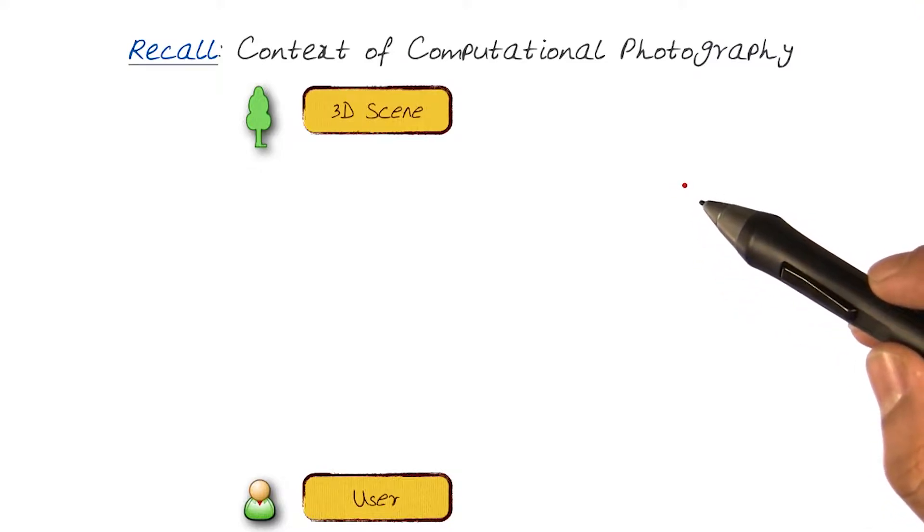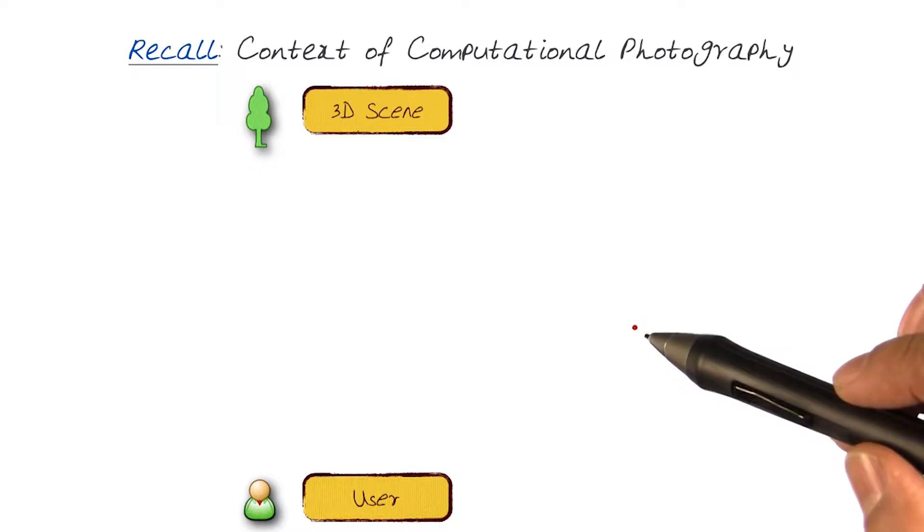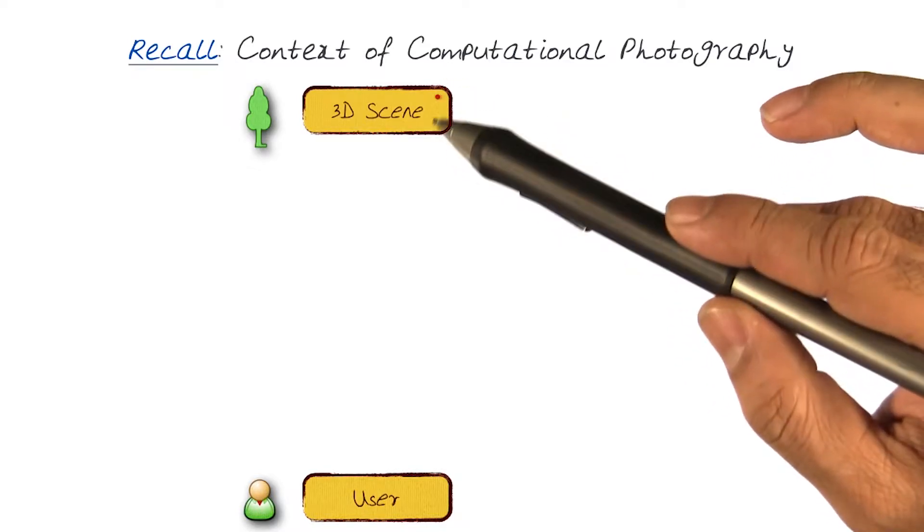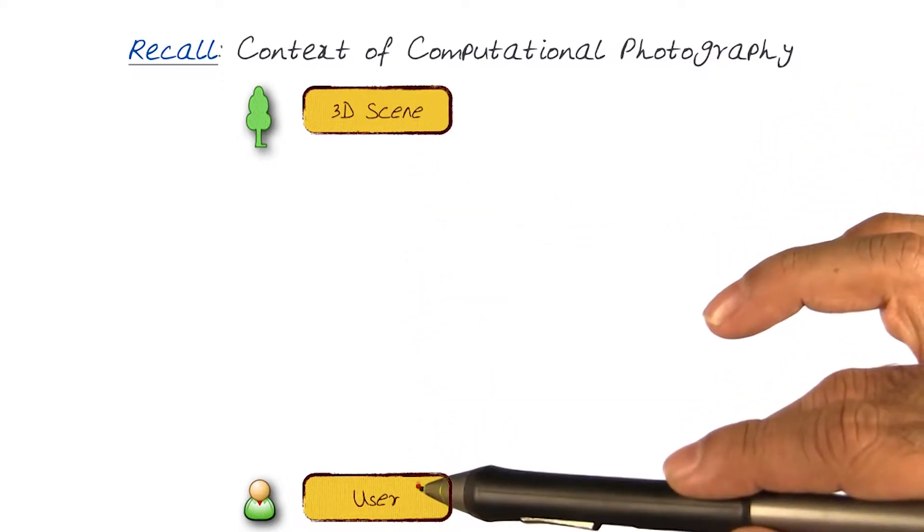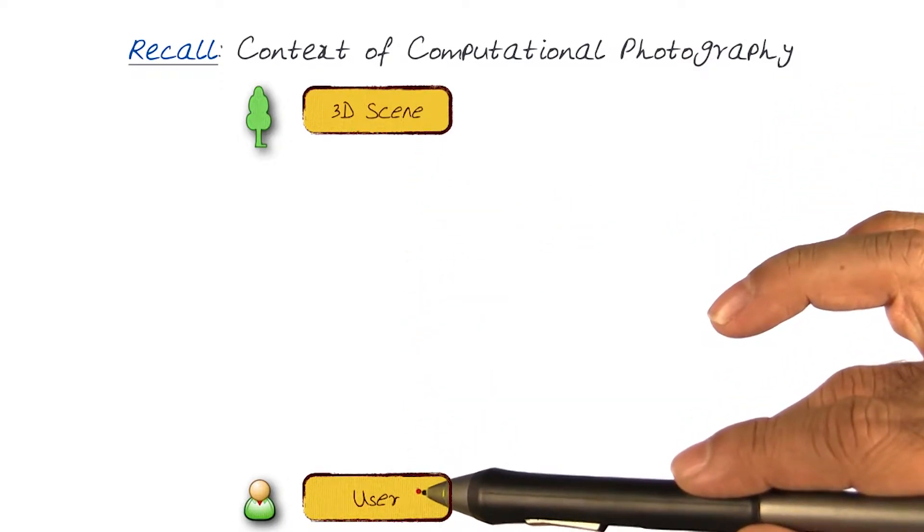Recall from our previous lectures where we talked about how computational photography is a process that takes information from a three-dimensional scene and goes through a series of different steps to generate an image that a user can interact with.